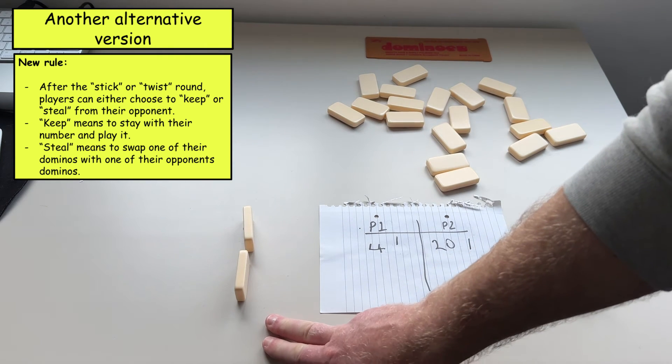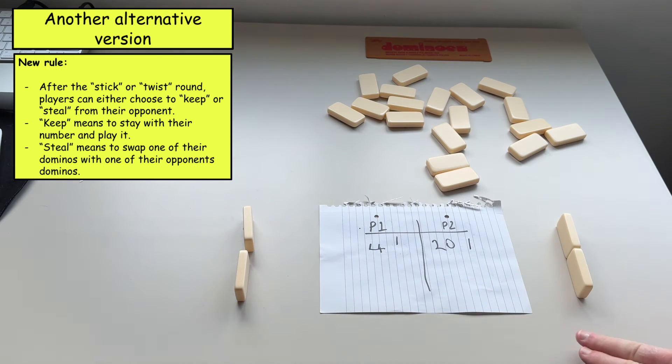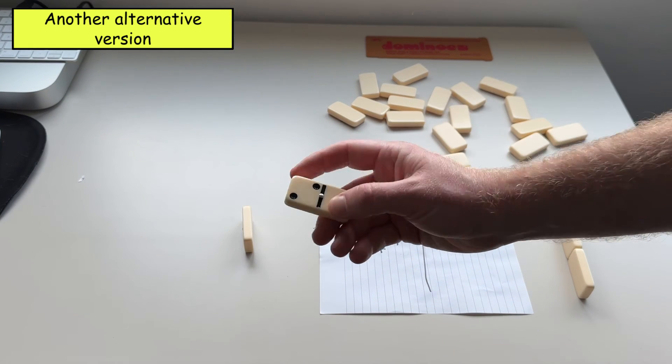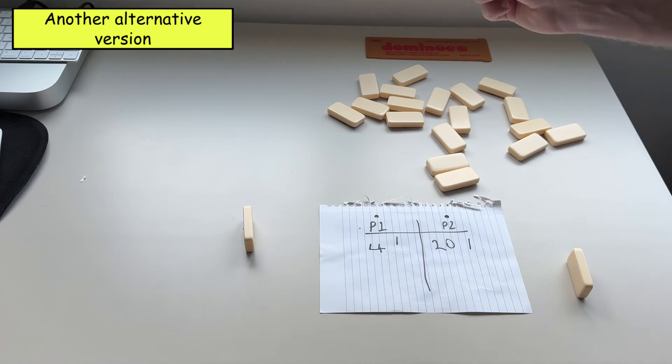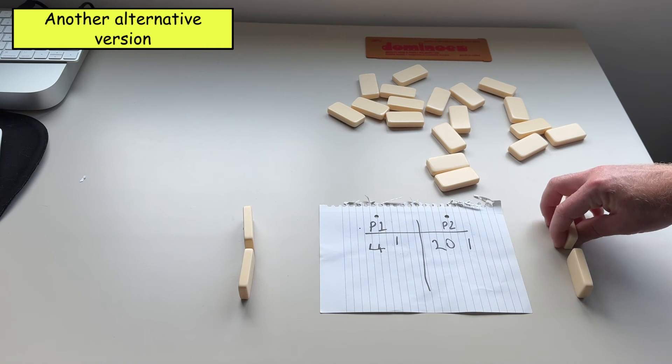Now player one will go first and they can decide do they want to steal a domino or do they want to keep. So if they're really happy with their number they can keep their number if they want. But they might decide to steal. So they would take their lowest domino, so this one here and they would steal a domino off the other player. And it would be a direct swap.